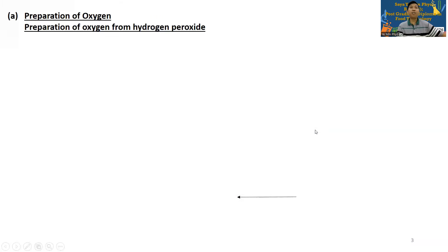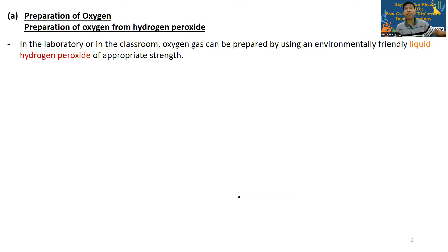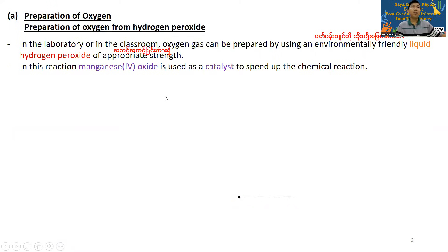Preparation of oxygen: oxygen can be prepared from hydrogen peroxide. Hydrogen peroxide is H2O2. In the laboratory, oxygen gas can be prepared by using an environmentally friendly liquid. You can use hydrogen peroxide of appropriate concentration, and it decomposes to produce oxygen.